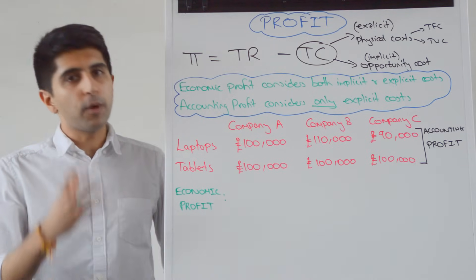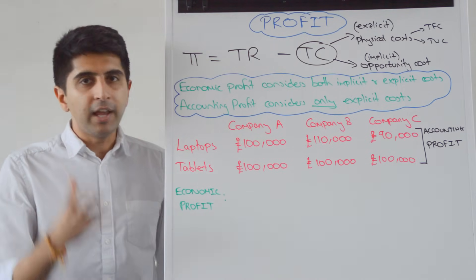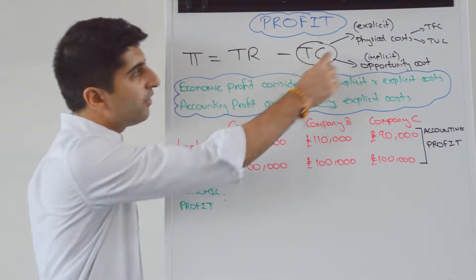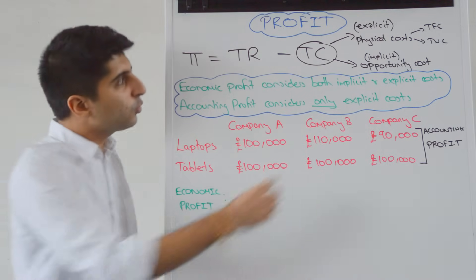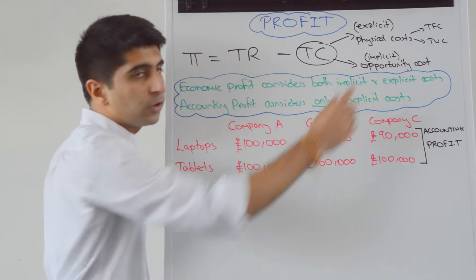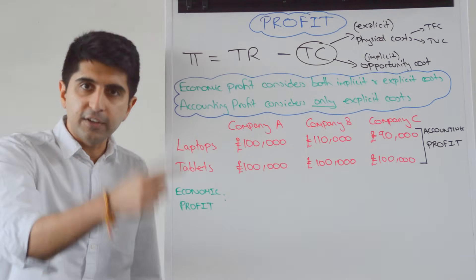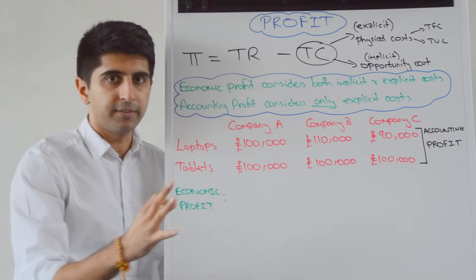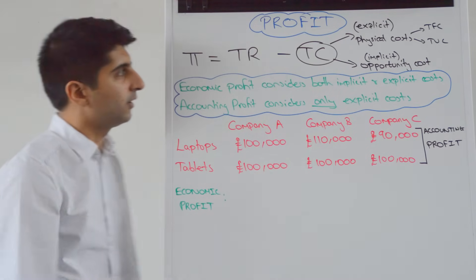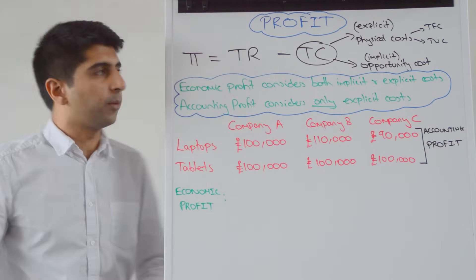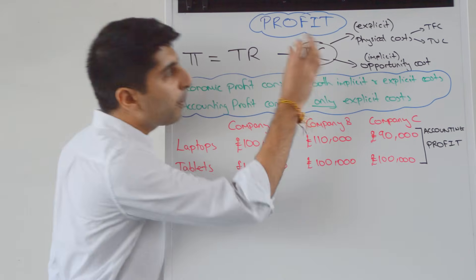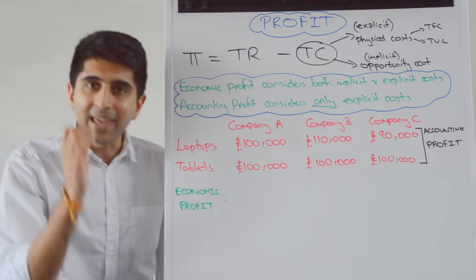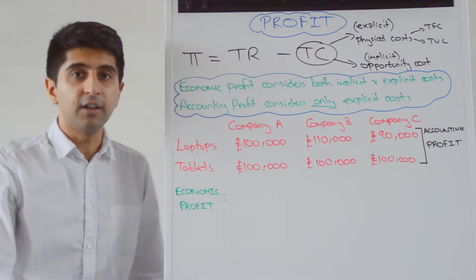However, in economics we are more subtle in the way we look at profit. Within total costs, yes we include the physical costs, the fixed costs, the variable costs — what we call the explicit cost of production. What we also include in economics is the opportunity cost of production, the implicit cost of production.